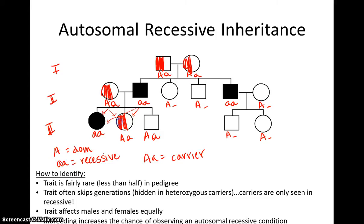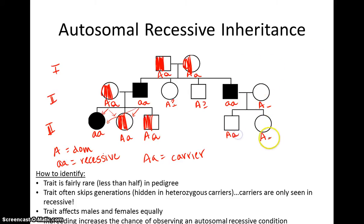These two individuals we can't determine — we'll leave those as a question mark since we have no offspring and the parents are heterozygous, giving any combination. Over here, the kids each have a little a based on dad, but we can't tell with mom whether she's little a or big A. At this point the pedigree is done — we've filled in all the genotypes we can infer.